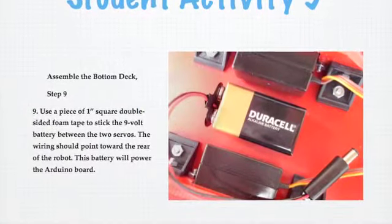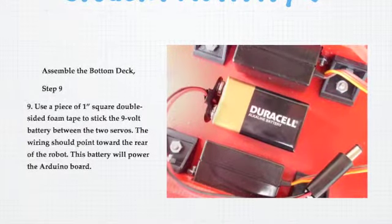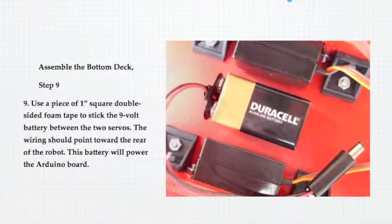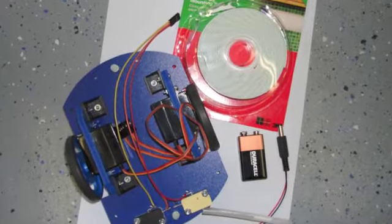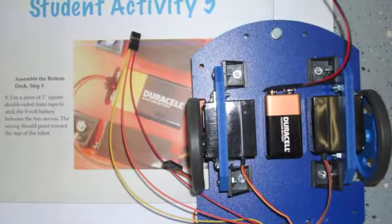In student activity five, they'll get to mount the nine-volt battery between the servos using double-sided tape. It's just a one-inch piece of double-sided tape, and it'll look like this when they're finished.